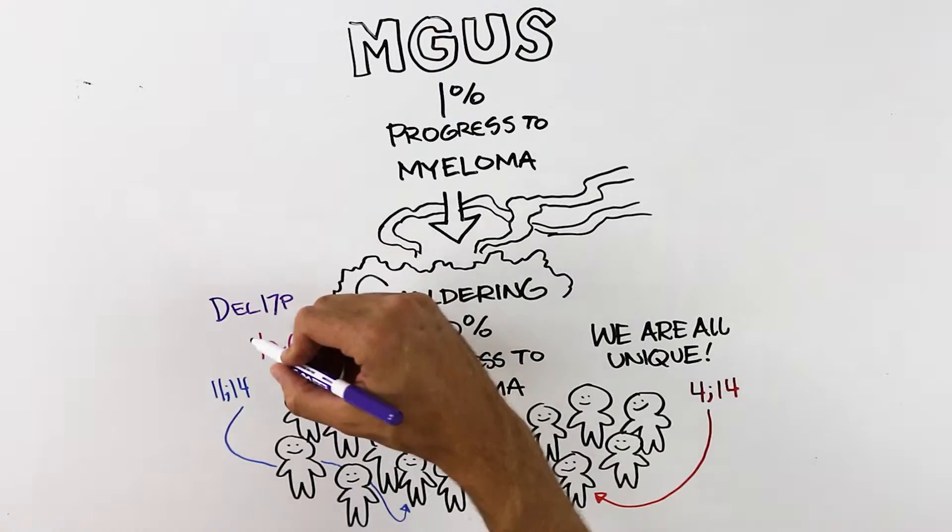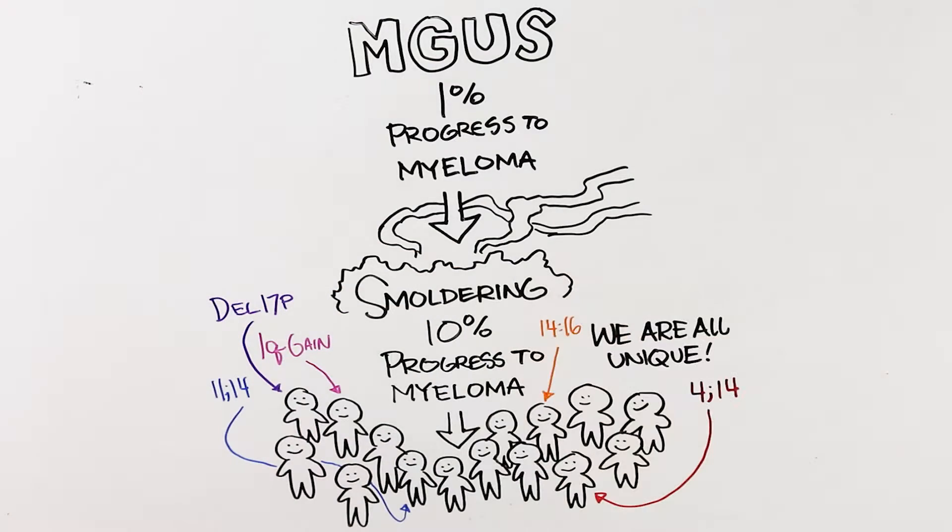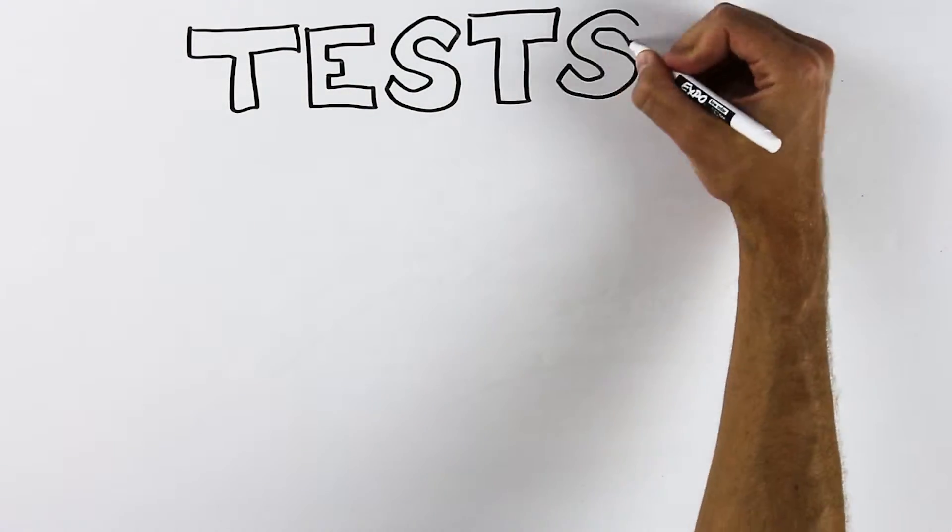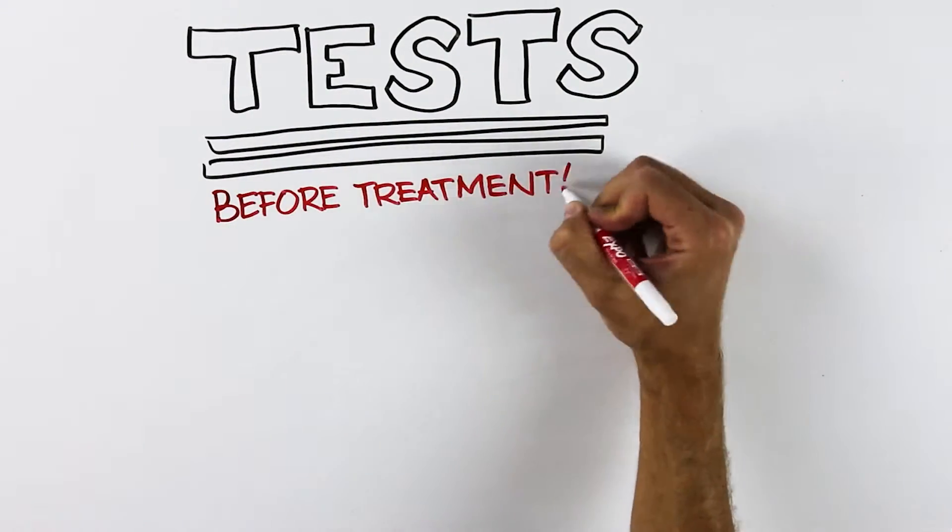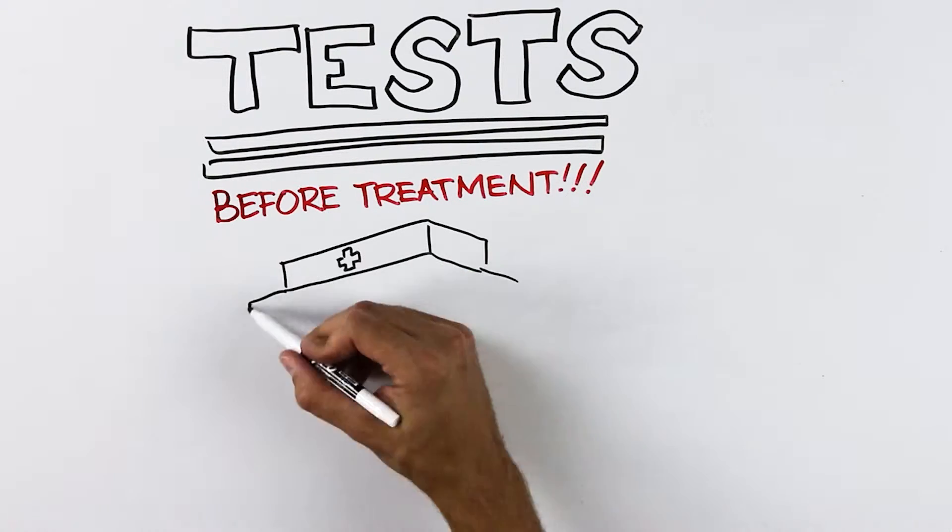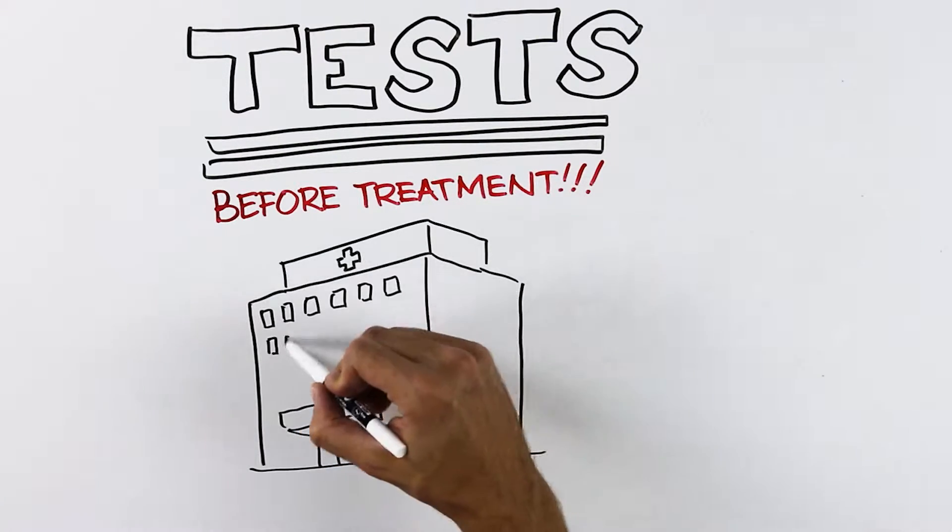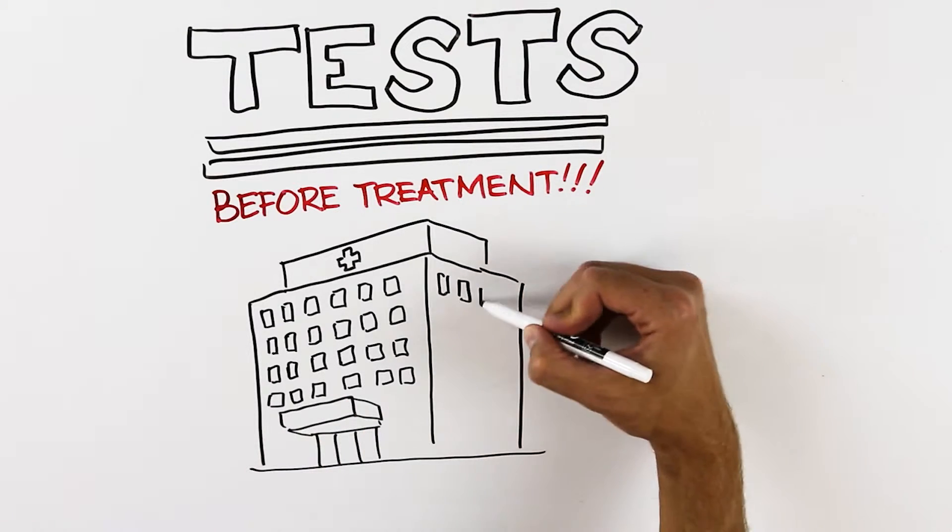Additionally, the genetics of myeloma can change and become more aggressive over time. Getting the right tests at the beginning of diagnosis is absolutely critical, because once treatment starts, the treatment kills the myeloma cells where these features reside. And to fight the enemy, you need to know as much about it as possible.